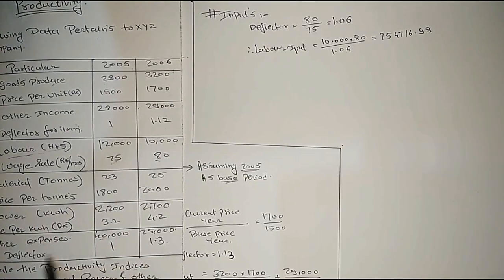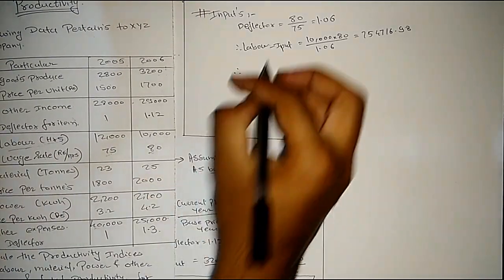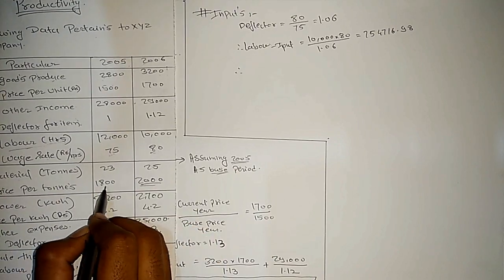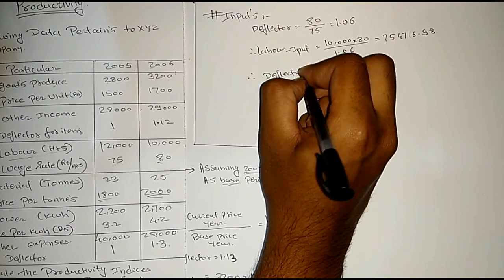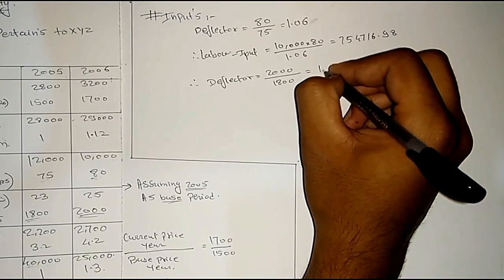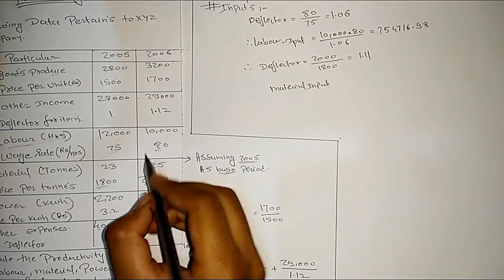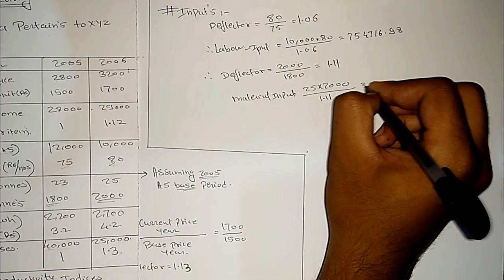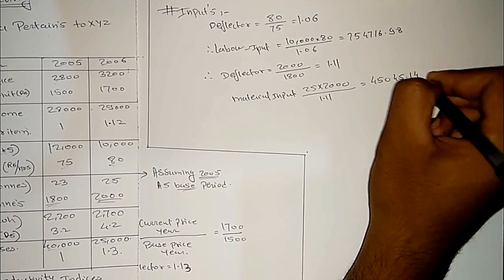Similarly, calculate the material input. The deflector for material equals current price divided by base price: 2000 divided by 1800, which equals 1.11. Therefore, material input equals 25 × 2000 divided by 1.11, giving a material input of 45,045.14.